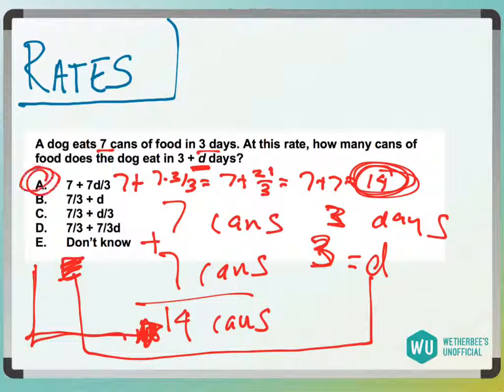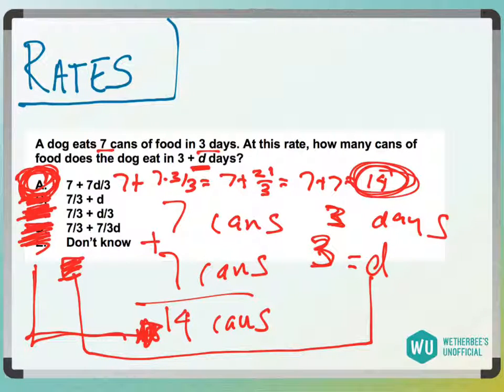So, we have answer choice A, which we'll keep, but B would be seven-thirds plus three. This isn't even going to be an integer. C is going to be seven-thirds plus one. That would be one and seven-thirds. That's not going to be 14. D is going to be seven-thirds plus seven over 21, which would be seven-thirds plus a third. That's not going to be it, and so we'd be left with answer choice A.